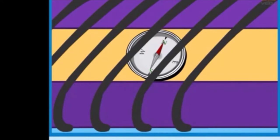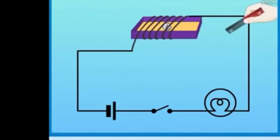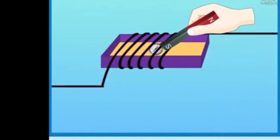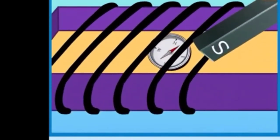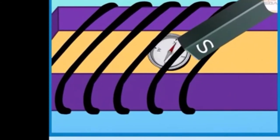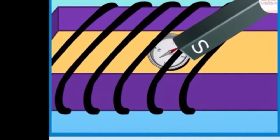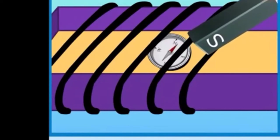So take a bar magnet and move it near to the compass needle. Observe the compass needle carefully. When we move the bar magnet near the compass needle, what happens? The needle gets deflected.